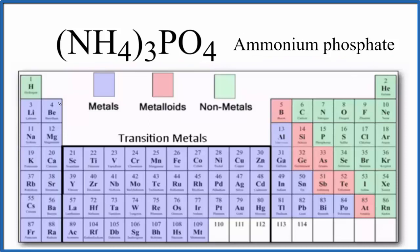If we looked at the periodic table here, we'd see we have nitrogen, hydrogen, phosphorus, and oxygen, and they're all nonmetals. So we kind of expect that this will be a covalent compound, also called a molecular compound.